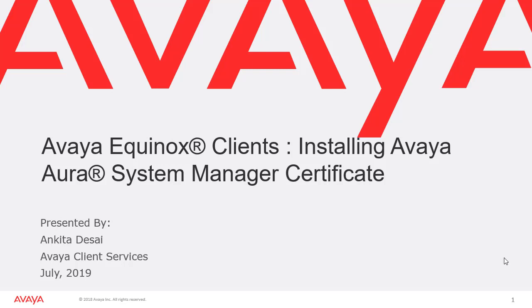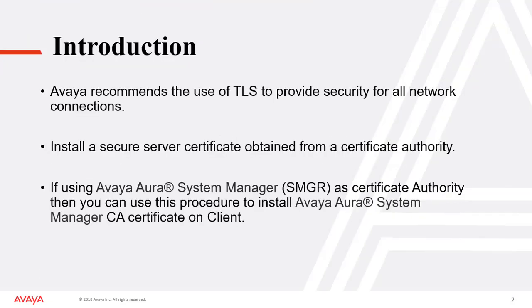Hi, my name is Ankita Desai with Avaya Client Services. In this video, we are going to see how to install Avaya Aura System Manager Certificate on Avaya Equinox Client. Avaya recommends the use of TLS to provide security for all network connections. Install a secure server certificate obtained from a certificate authority. If you are using Avaya Aura System Manager as a certificate authority, then you can use this procedure to install the certificate on the client.